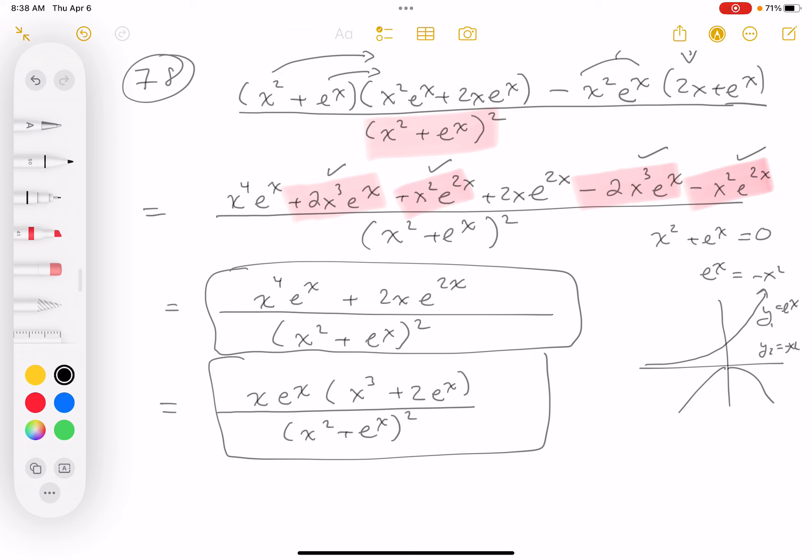So I'm going to say there's no restrictions. Let's look at our key, and I'm looking for it. Do I see it? What I'm seeing is this answer being listed, which is x to the 4 e to the x plus 2x e to the 2x, and at the bottom you see the quantity x squared plus e to the x squared. Again, you need to multiply it out, but I do see that answer being listed. Thank you.